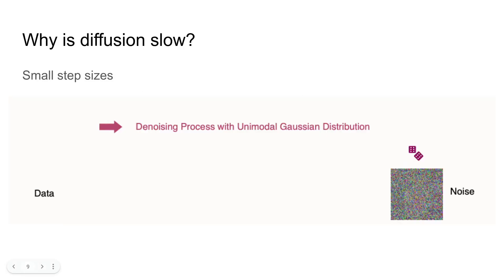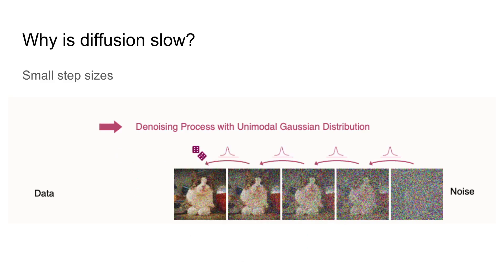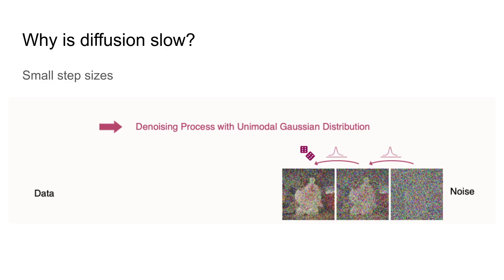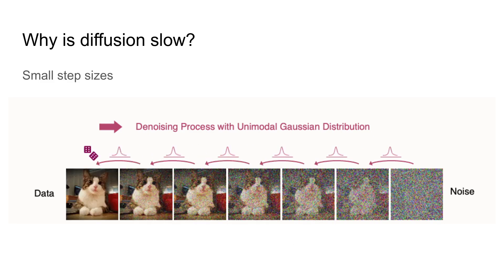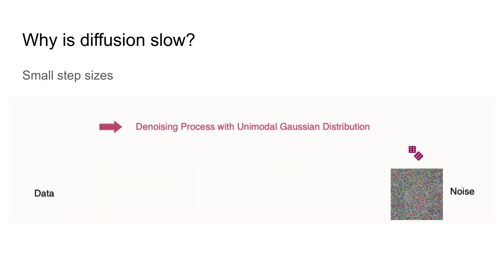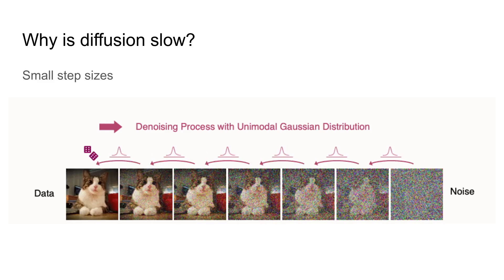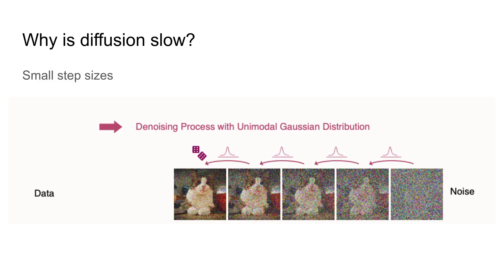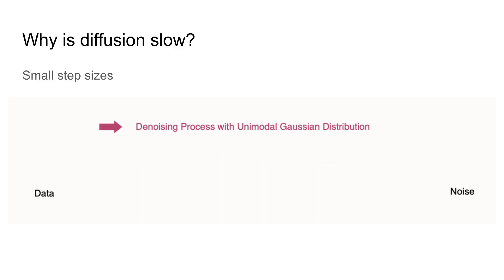Once the model is trained we can convert any noise into an image by repeating this reverse diffusion process. Unfortunately, this is also the reason why diffusion models are so slow. In order to generate a single sample we need to go backwards through the diffusion process step by step.